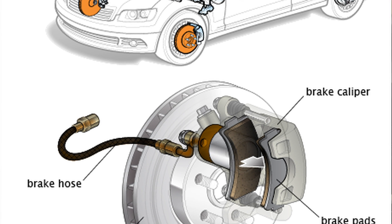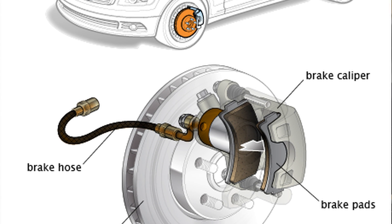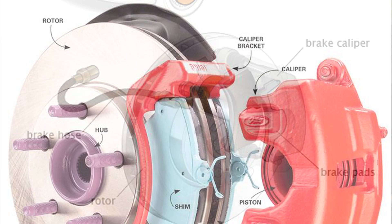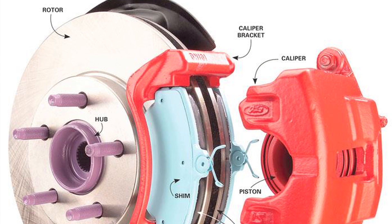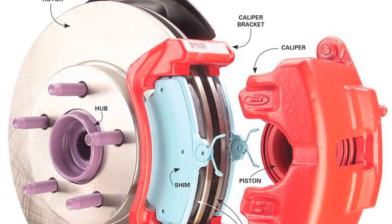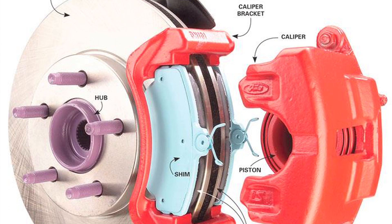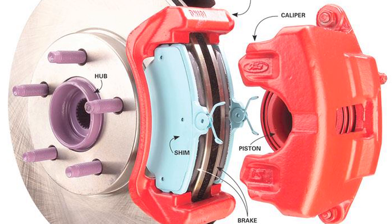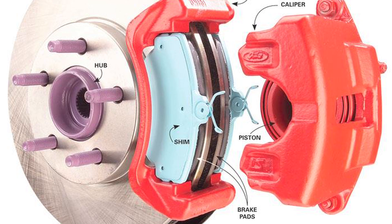The surface of your rotor needs to remain uniform in order to give the brake pad a constant surface to come in contact with. Heat caused by constant braking warps the surface, causing grooves.